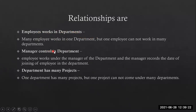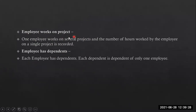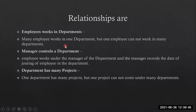For your reference summary — entities and relationships: employee works for department and controls department. Department has many projects. Employee works on projects. Each employee has dependents; each dependent belongs to only one employee. One employee works on several projects, and the number of hours an employee works on a single project is recorded. One department has many projects but one project cannot span multiple departments.